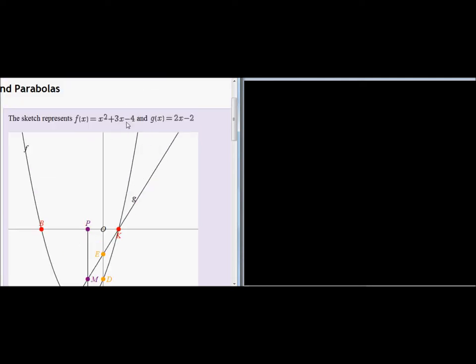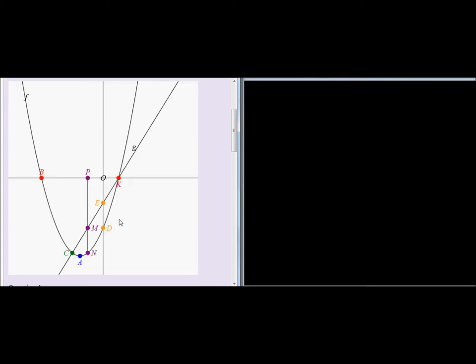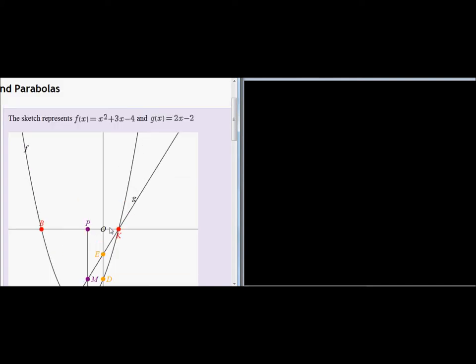Now we can read off the y-intercept immediately because that's when x is 0. So if x is 0, the y-intercept is negative 4 for the parabola, so D is negative 4. For g, if x is 0, then the y-intercept is negative 2.